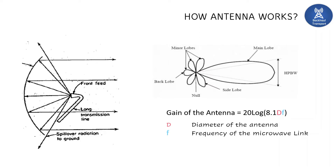In some cases, if a tower owner does not allow a bigger antenna, you can reduce d but increase the frequency f to maintain the same gain. This is how you can play with d and f to adjust the gain of the antenna. In summary, if frequency increases, the gain of the antenna also increases.